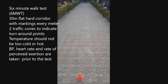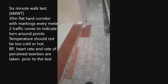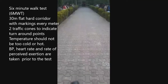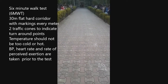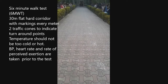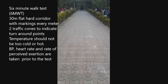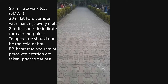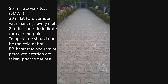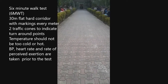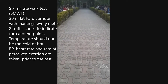Now I am going to instruct the participant how to perform this test. Prior to conduction of the test, it is important that the participant should be made to sit on a chair. The vitals should be stable, and then you take the heart rate, blood pressure, saturation, and the modified walk scale can be used to take the rate of perceived exertion.